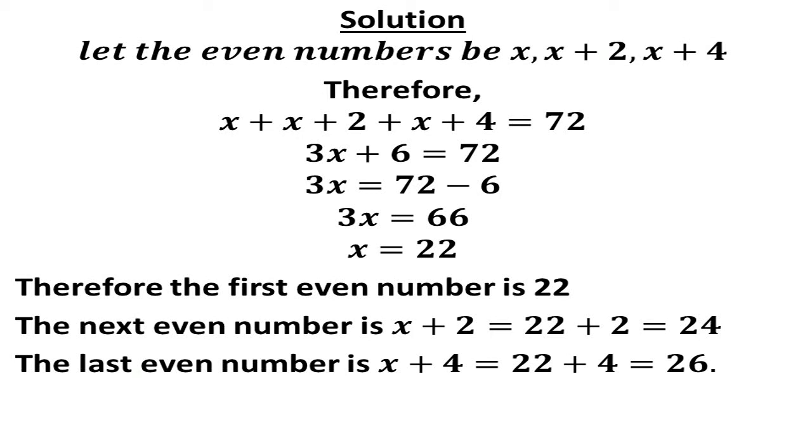What is 72 minus 6? That will give us 66. 3x is equal to 66. Therefore you can find our x by dividing by 3. Then our x is 22.